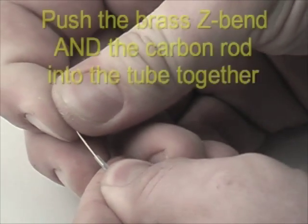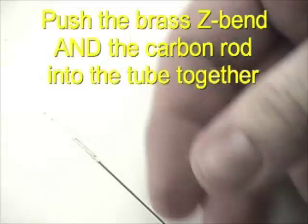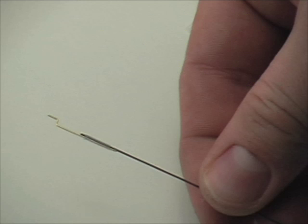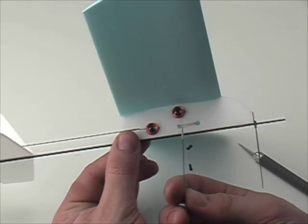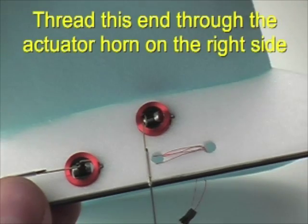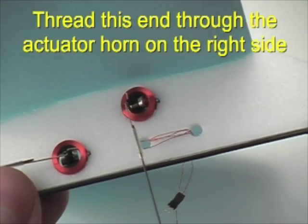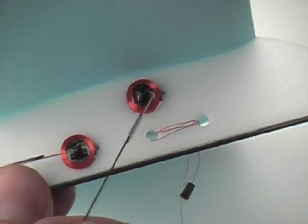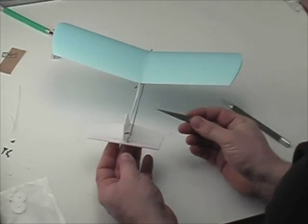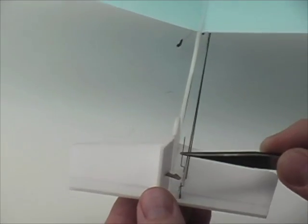Now we take a Z-bend, and a tube, and a carbon rod, and put them together just like so. Thread the end of the Z-bend through the control horn of the MiniAct actuator. It should be a perfect fit. Bring the control rod back, and you'll be prepared to attach to the rudder in this case.